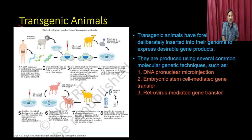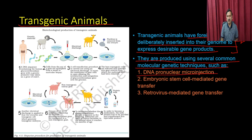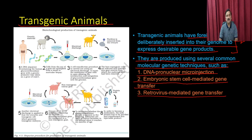Transgenic animals have foreign DNA deliberately inserted into their genome to express a desired gene product. These gene products can be of multiple types depending on the transgenic animal being produced. They are produced using several common molecular genetic techniques: DNA pronuclear microinjection, embryonic stem cell mediated gene transfer, or retrovirus mediated gene transfer — three methods to generate transgenic animals.